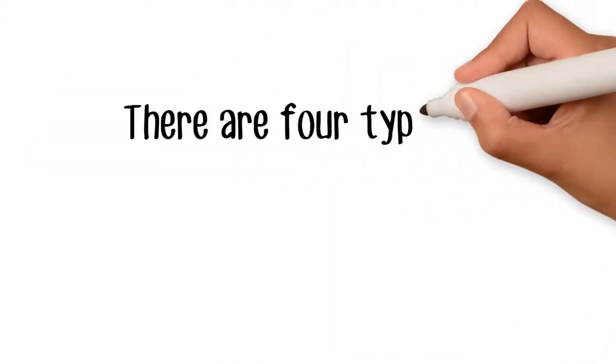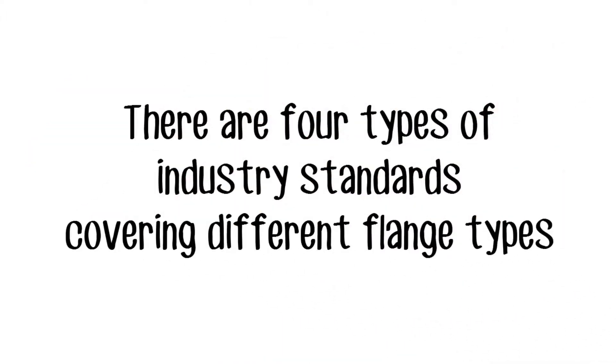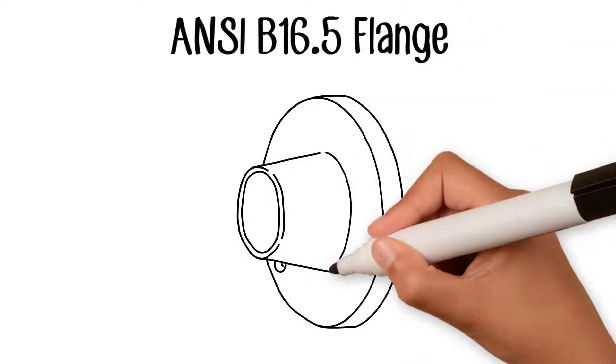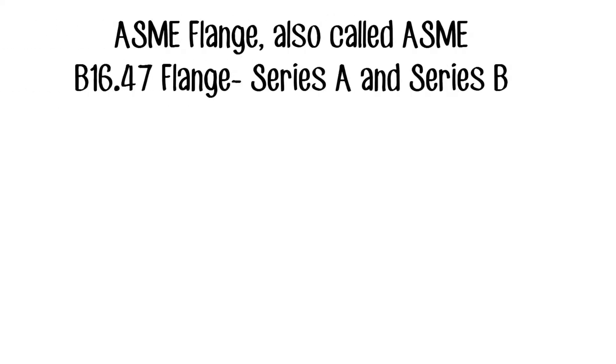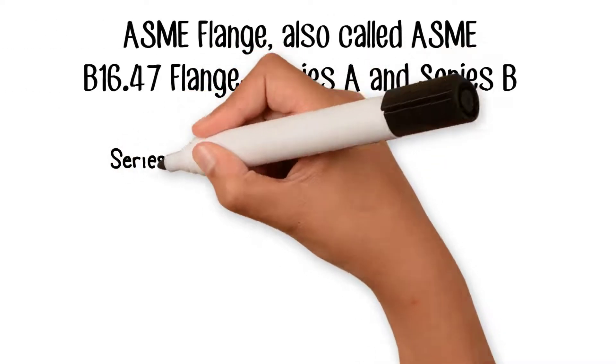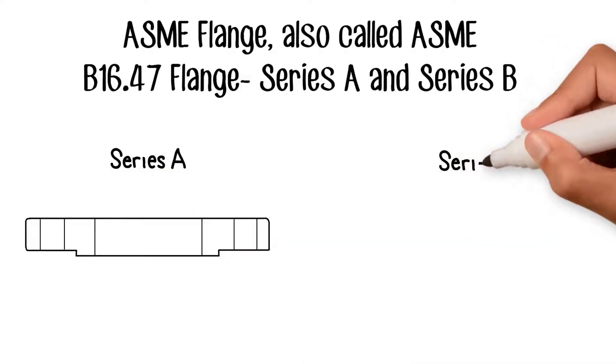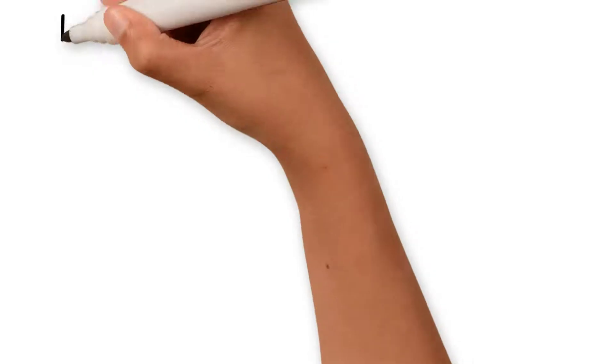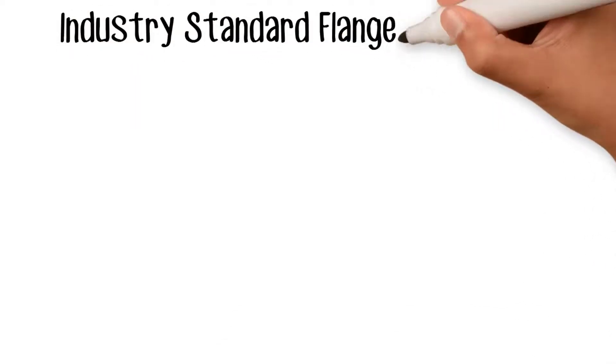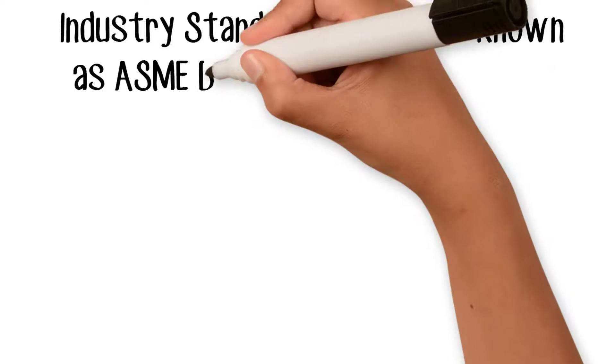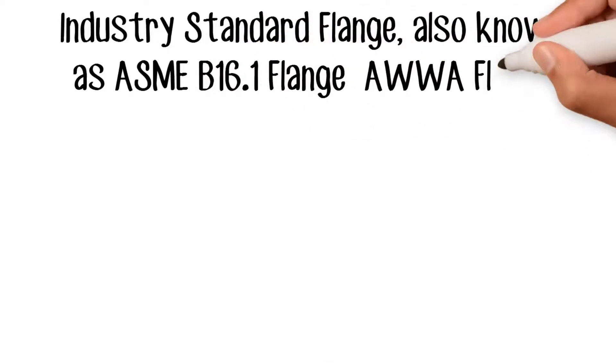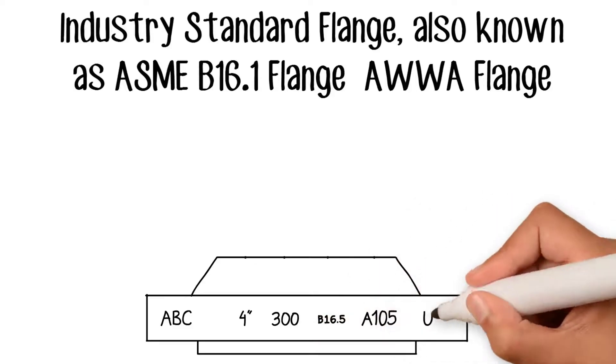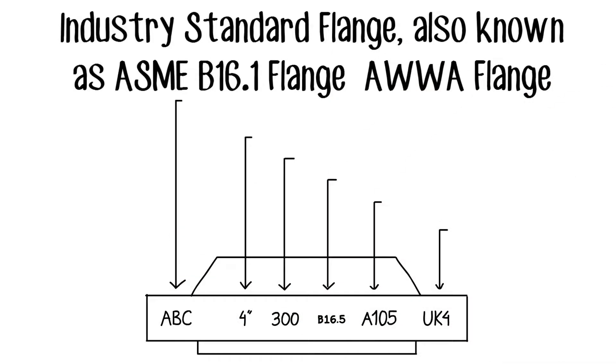There are four types of industry standards covering different flange types. ANSI flange, also called ASME B16.5 flange. ASME flange, also called ASME B16.47 flange, Series A and Series B. Industry standard flange, also known as ASME B16.1 flange and AWWA flange. ASME B16.5 covers flange sizes from half-inch nominal to 24-inch nominal.